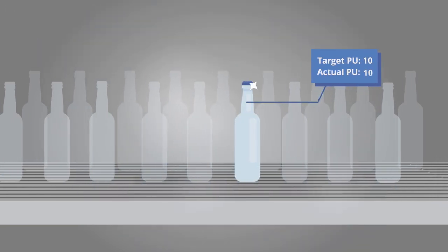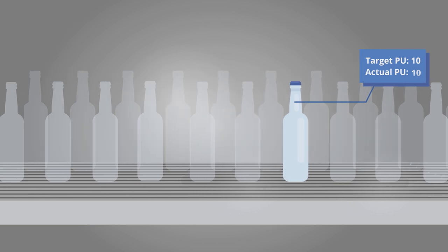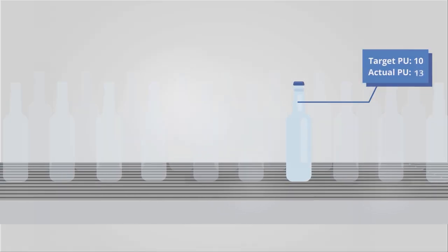Backups often occur on a filling line, however, and the tunnel pasteurizer stops. This causes the number of PUs to rise above the target value. In order to keep this increase to an absolute minimum, PU control is extremely important.